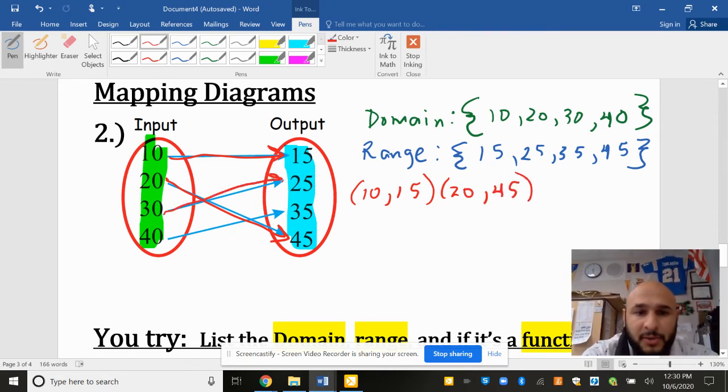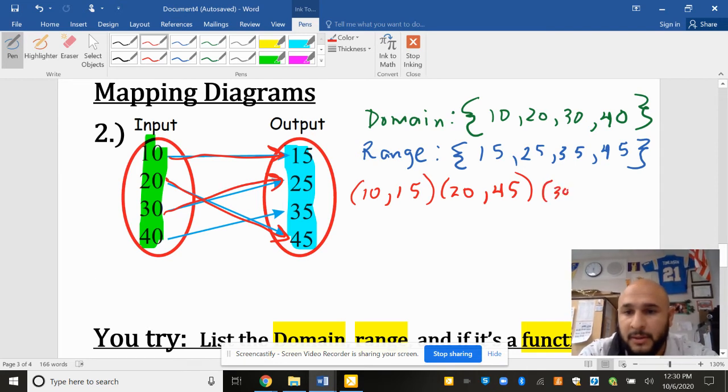And then 30 went to 25. So (30, 25). And then my last point was (40, 35).